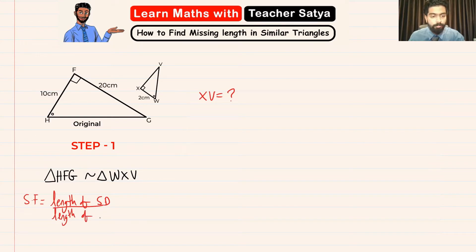We see that we know WX in the smaller triangle and we also know the length of HF in the bigger triangle, so we can find its scale factor by taking WX over HF. Now our WX is 2 and HF is 10, therefore 2 over 10 is 0.2.